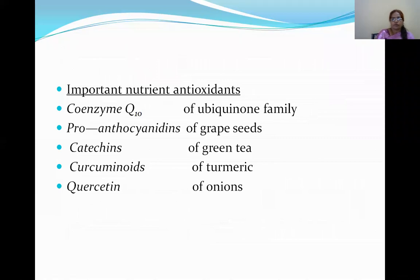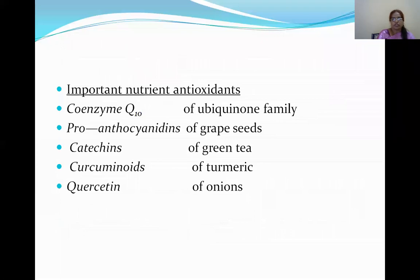Other important nutrient antioxidants: coenzyme Q (ubiquinone family). Grape seeds contain proanthocyanidins as an antioxidant. Catechins are antioxidants present in green tea. Curcuminoids are antioxidants present in turmeric. Quercetin is an antioxidant present in onion.